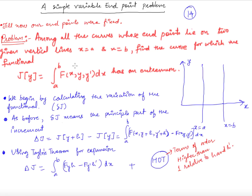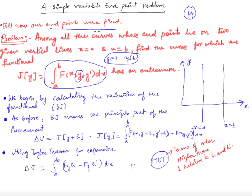Welcome to this 14th lecture on calculus of variation. Till now, we had a functional and were trying to find the extreme values of this functional where the inputs y were fixed at the boundaries — y(a) and y(b) were predefined. Our endpoints were fixed. Now we want our endpoints to be free, but before tackling the generalized case, we will take a simple free endpoint problem.